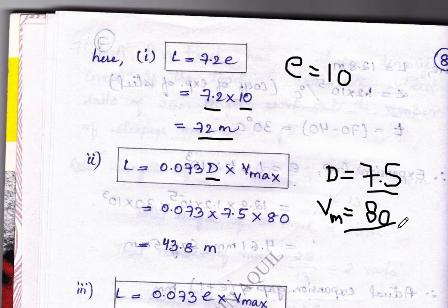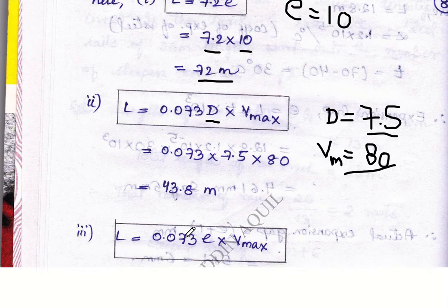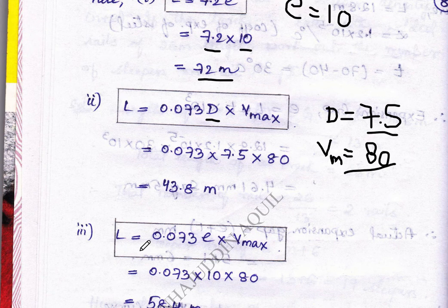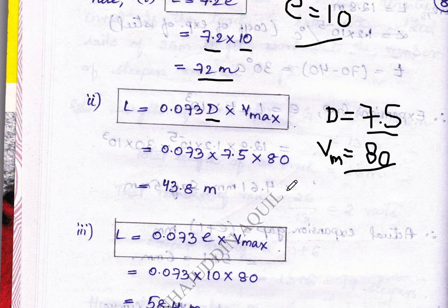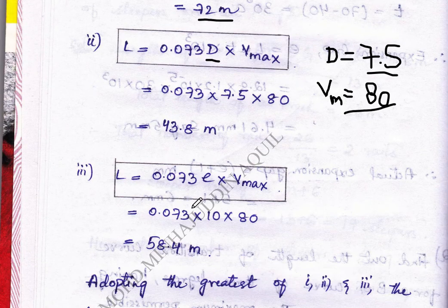Substituting the values for the second condition, we get 43.8 meters. The last condition is L equal to 0.073 times e into V max. We have the value of e as 10 and V max as given in the question. Substituting in this formula, we get 54.8 meters.